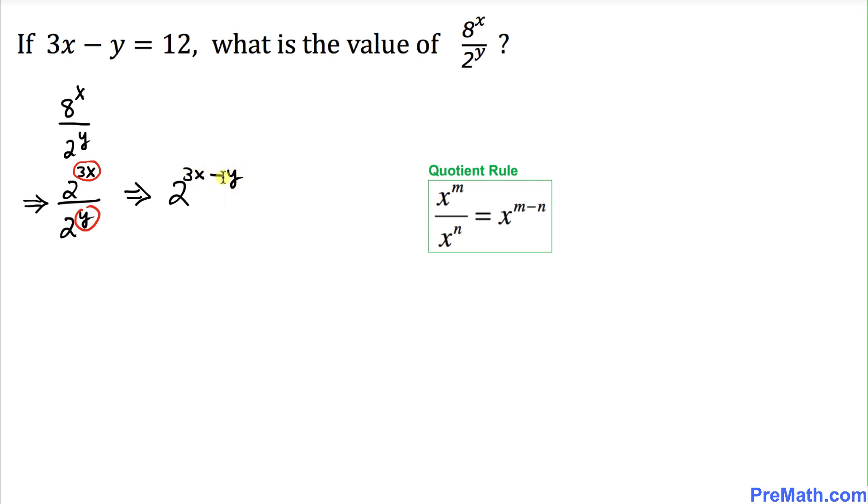Now we can see this exponent 3x minus y is equal to 12, as you can see this is given to us. So I can write this one as 2 power 12, and that is our numeric answer.